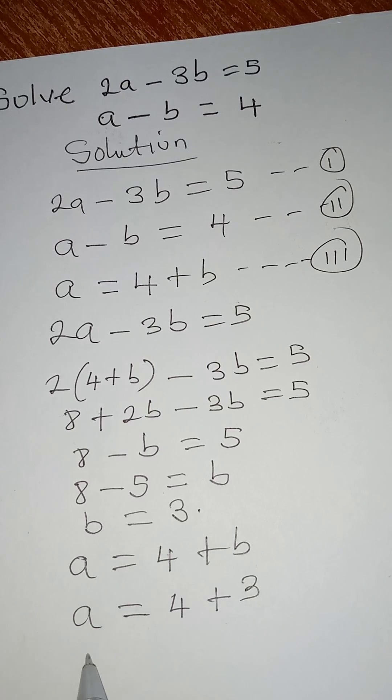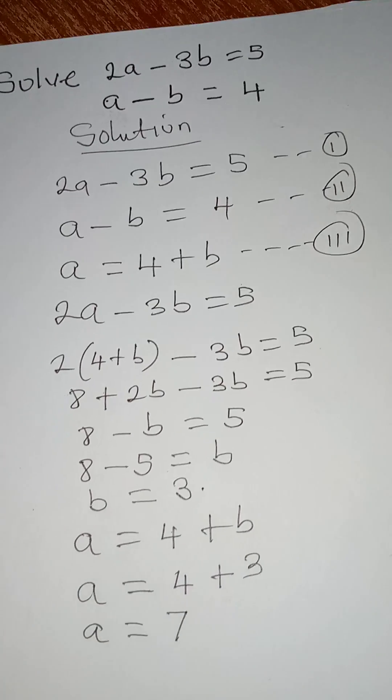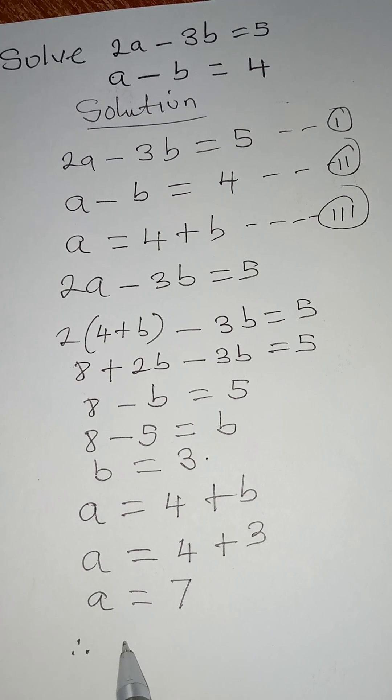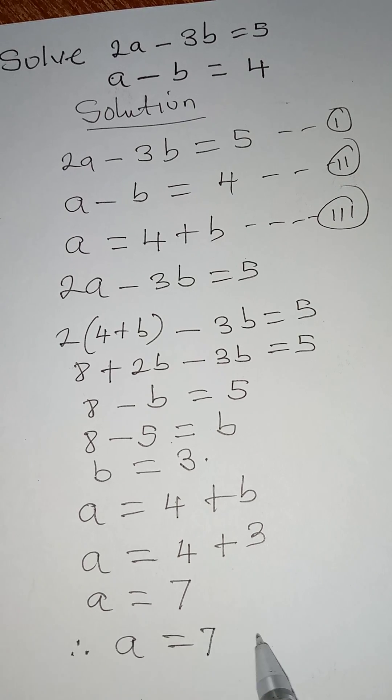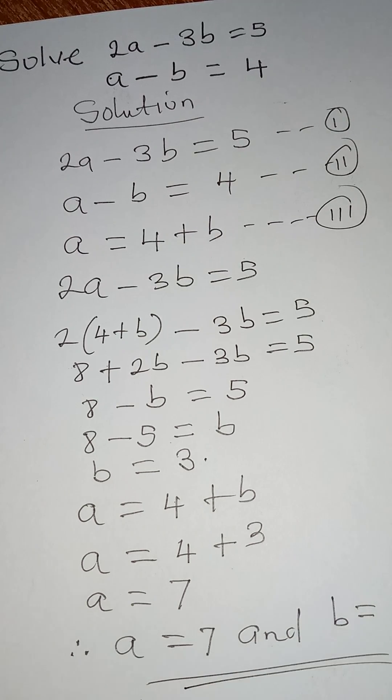So we put 3 and a is equal to 7, 4 plus 3. So therefore the values that we've obtained are a equal to 7 and then b equal to 3. Thank you for watching.